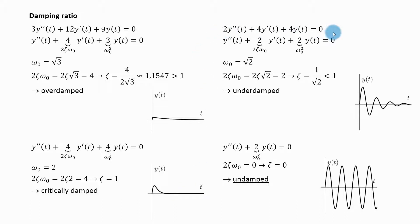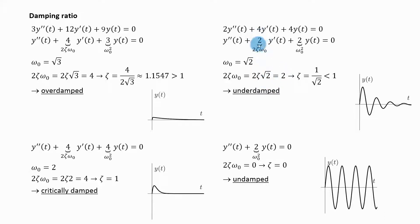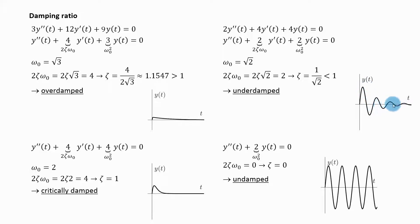Now this differential equation. Here I need to divide by two, which gives me this differential equation. I can read that omega naught squared is two and two zeta omega naught is two. From there my natural frequency is square root of two, and substituting, two zeta times square root of two equals two, so zeta is one over square root of two, which is less than one. That means the system is underdamped — its response will have oscillations. It will be stable, but it will stabilize in this oscillatory manner.